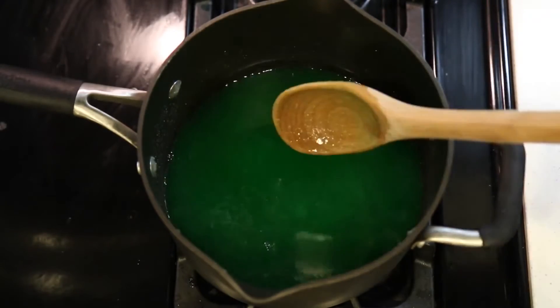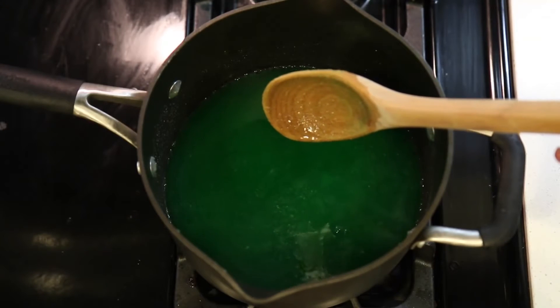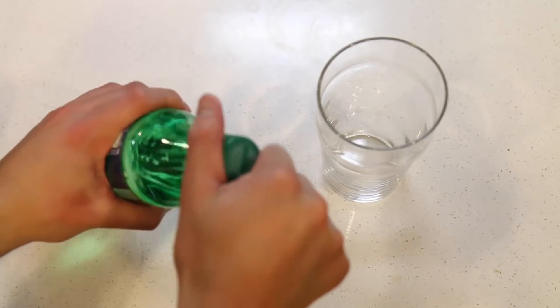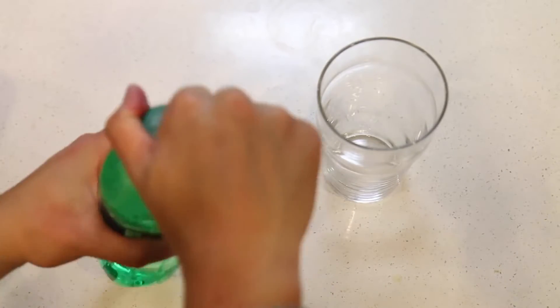Now we'll put the stove on low heat! While we wait for this to heat up, let's pour out the Sprite! The reason why I use more water today is because we don't need the Sprite! We'll just pour this into a glass to enjoy later!